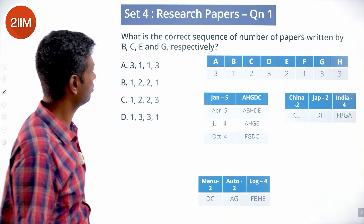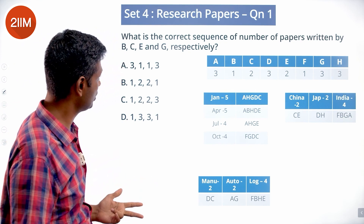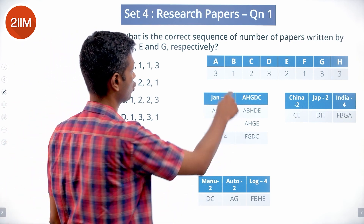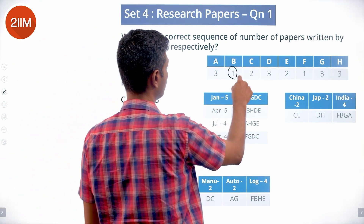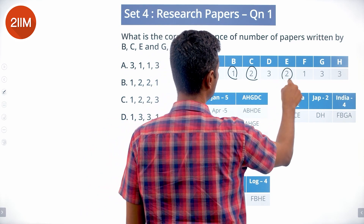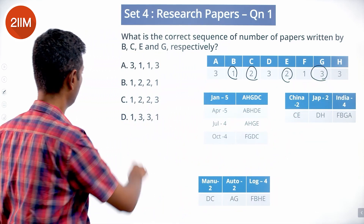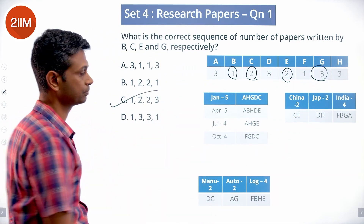Question: What is the correct sequence of number of papers written by B, C, E, G? B is 1, C is 2, E is 2, G is 3. The answer is 1, 2, 2, 3.